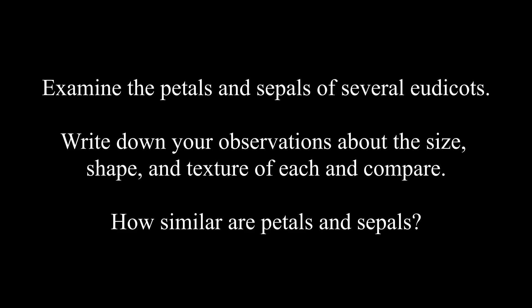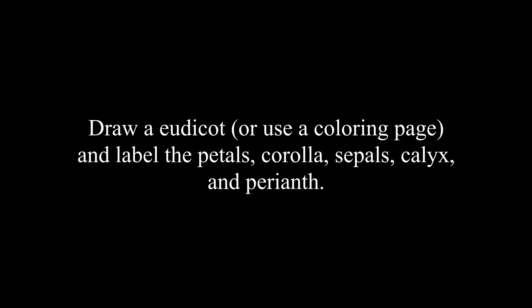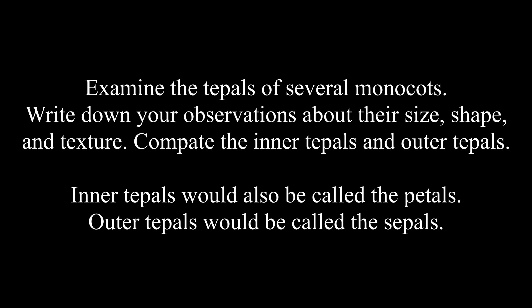In your journal, examine the petals and sepals of several eudicots. Write down your observations about their size, shape, and texture, and compare them with each other. Draw a eudicot and label: petals, corolla, sepals, calyx, and perianth — five things to label. Then examine the tepals of several monocots. Write down observations about their size, shape, and texture, comparing inner tepals (the petals) and outer tepals (the sepals). Draw those too, and this time label only the tepals and the perianth.